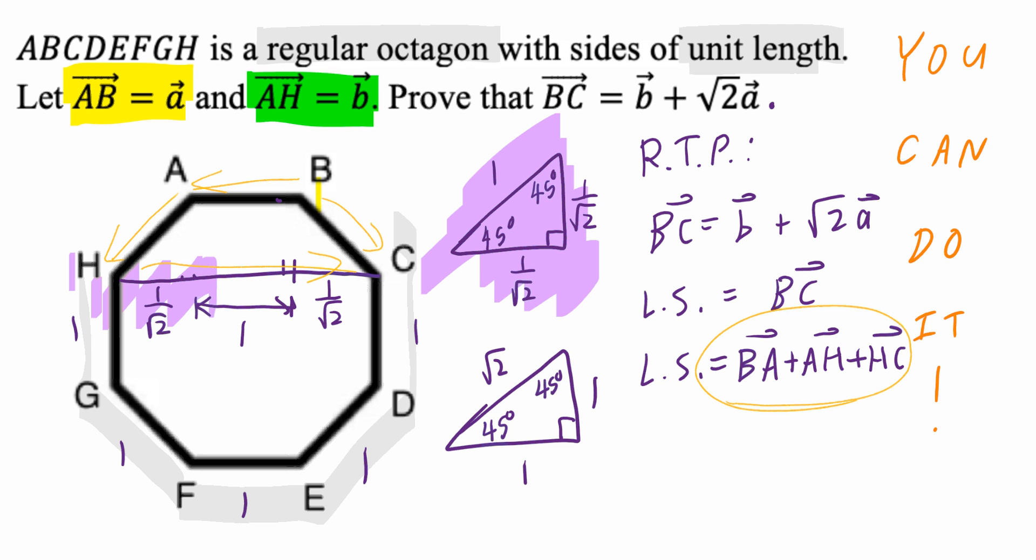So again, that dual mindset, right? Graphically, you can see why this makes sense. Algebraically, again, A and A are the same. H and H are the same. Take the beginning and the end. That's going to give you vector BC.